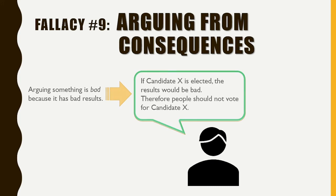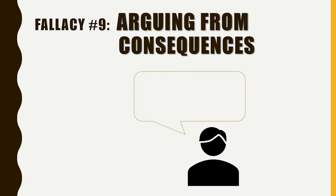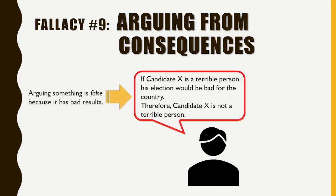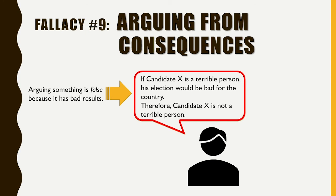What would be fallacious is if someone argued as follows: if Candidate X is a terrible person, his election will be bad for our country, therefore Candidate X is not a terrible person. This is like saying: if poison ivy gives people an itchy rash, I might touch it and get an itchy rash, therefore poison ivy does not give people an itchy rash. In these cases, bad consequences are being used as reasons that something is not true — this is fallacious reasoning.